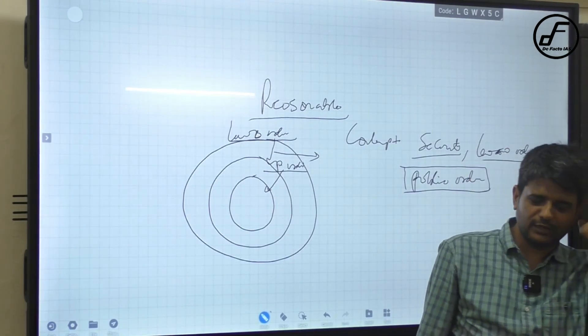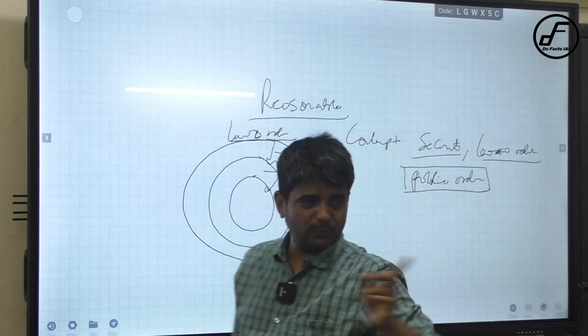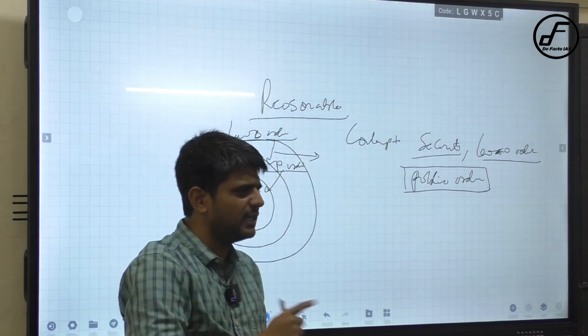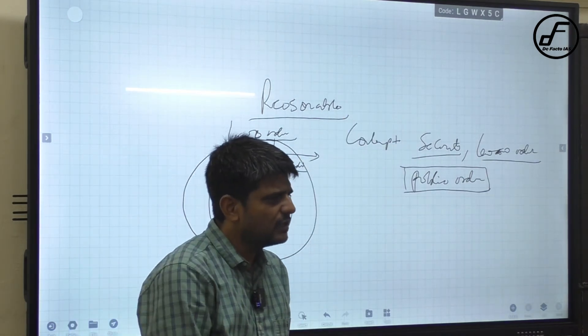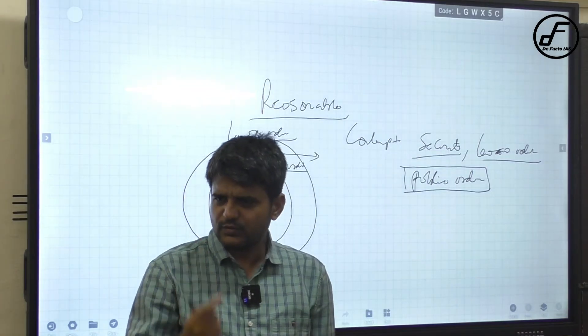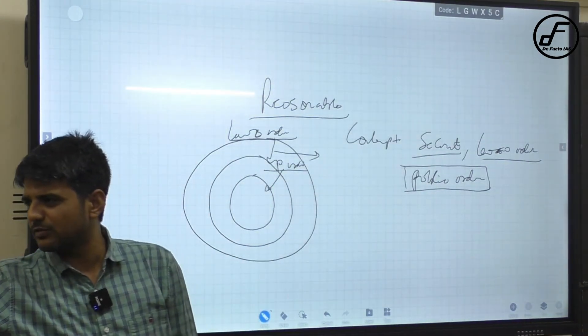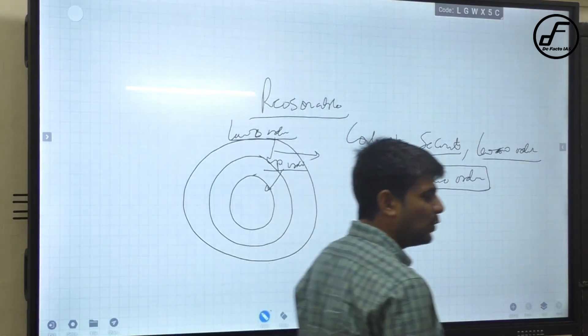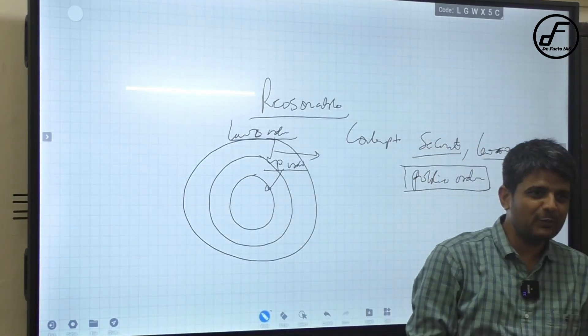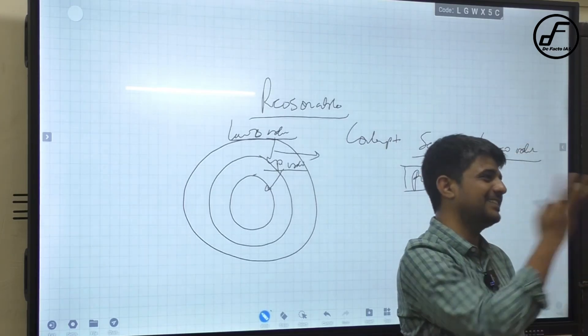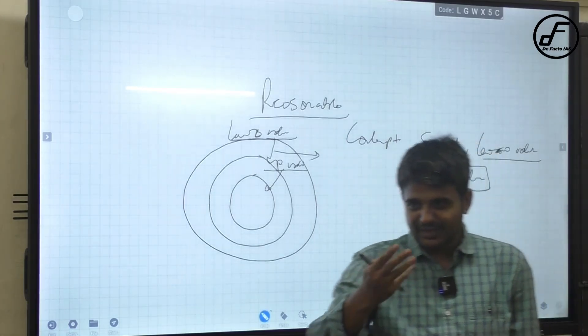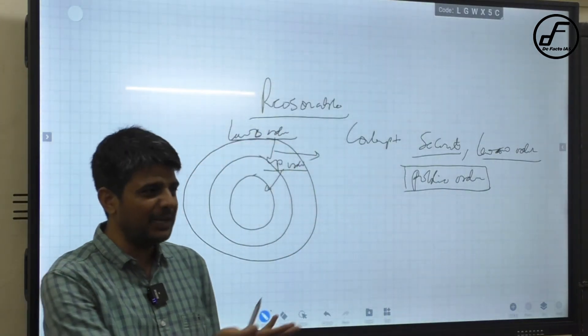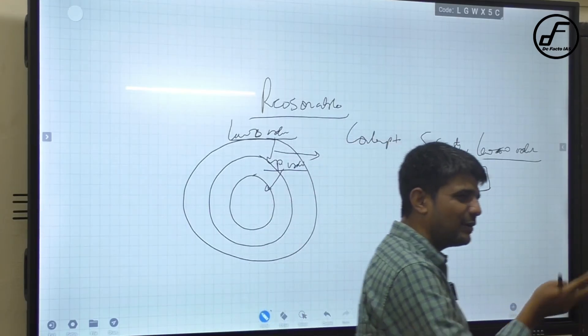There was one person, he went to that Hathras case, he was arrested. No one knew him as a journalist, but once he was arrested by UP police everyone knew that he was a journalist. Same thing happened with the alt news founder also, he was given bail recently. The question again is whether it is violating law and order or public order.